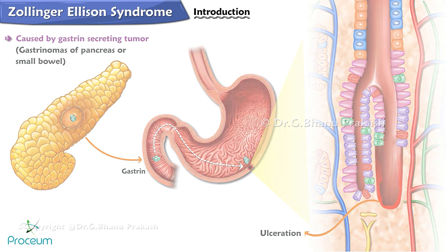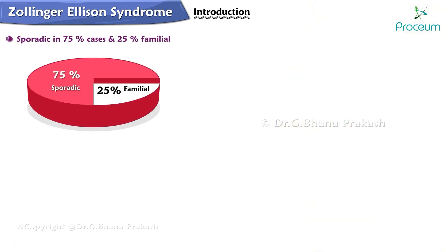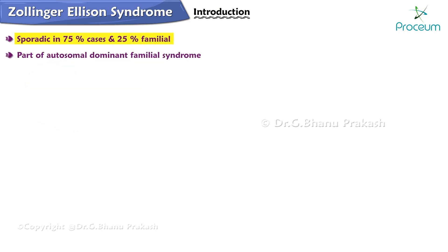This syndrome is sporadic in 75% of cases, and the remaining 25% are familial, as part of an autosomal dominant familial syndrome — multiple endocrine neoplasia type 1.